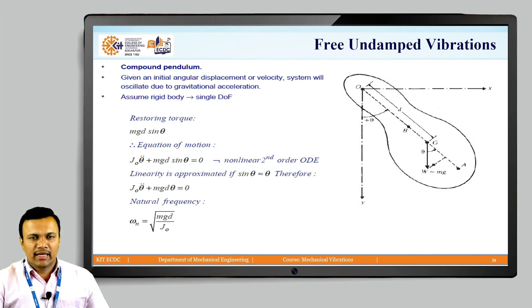For the linearity we can approximate sin theta is equal to theta. So we can write down the same equation as J0 theta double dot plus mg d theta is equal to 0. From this we can write down the natural frequency as under root of mg d by J0.